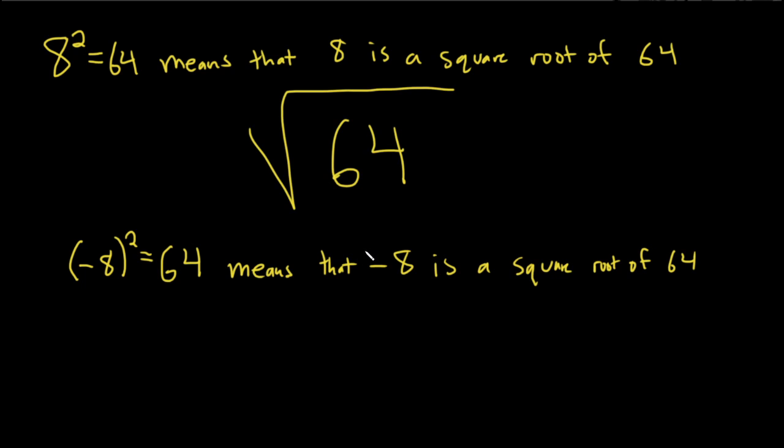So 64 actually has two square roots, 8 and negative 8. So what do we do? Which one is it? Well, this mysterious symbol denotes that whatever you have here, you take the non-negative square root of whatever is there.